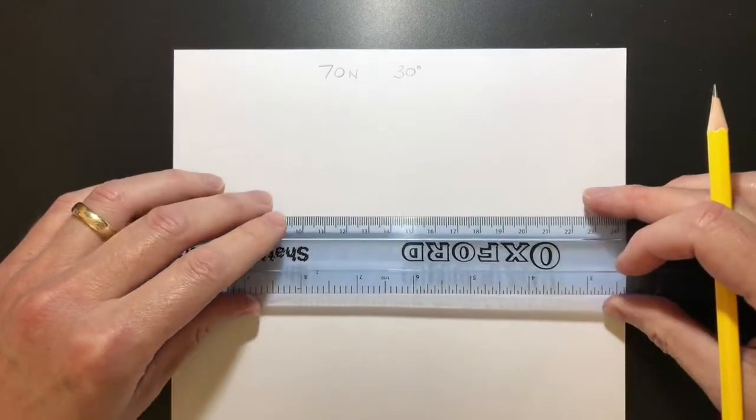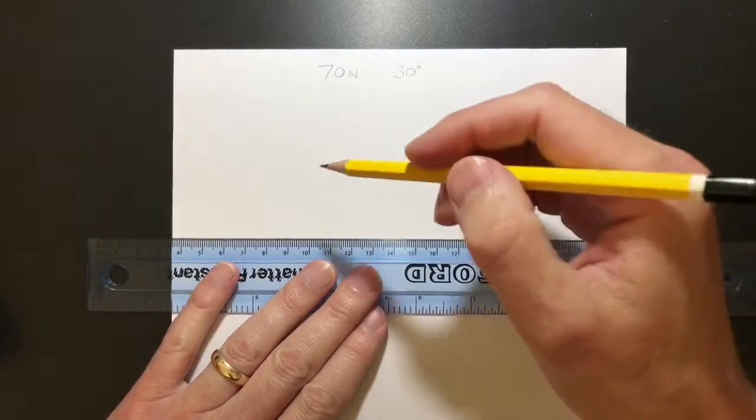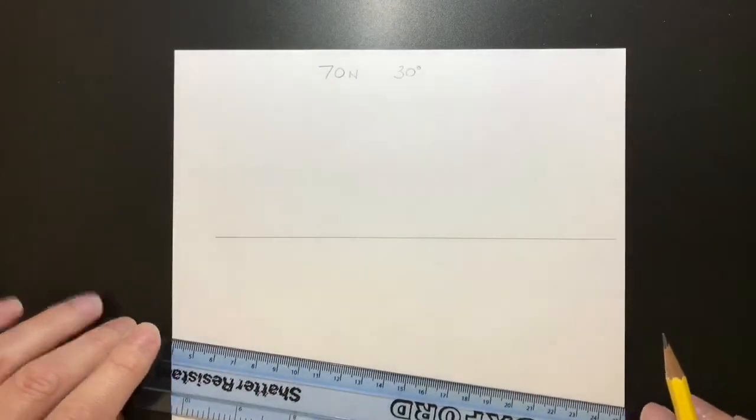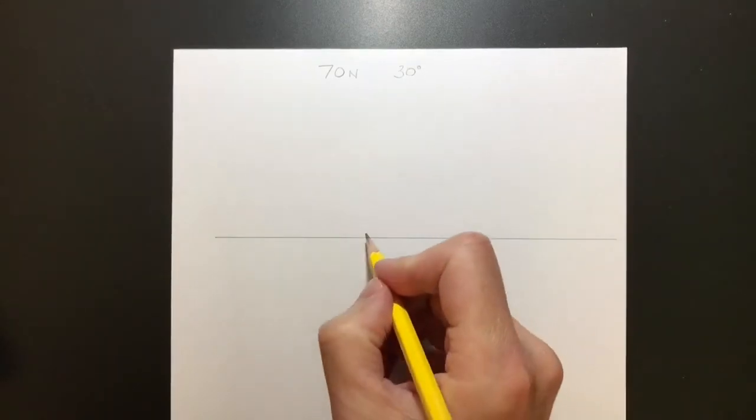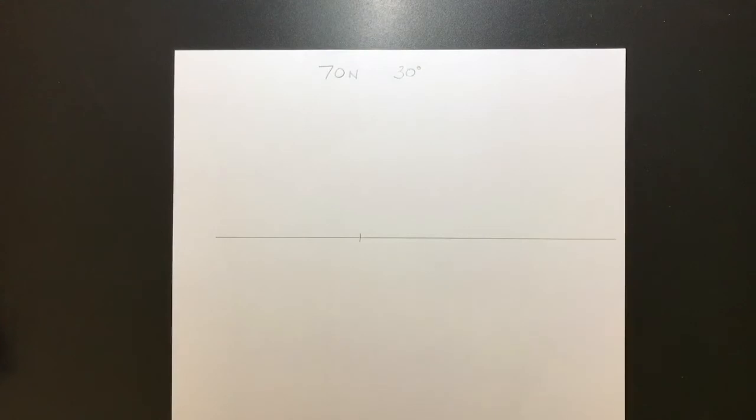So first thing we're going to do is draw a horizontal line. This is our horizontal line here. The horizontal line is going to be our starting point, and on here I'm going to put a mark where that force is going to start from.